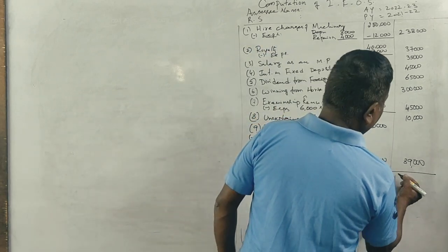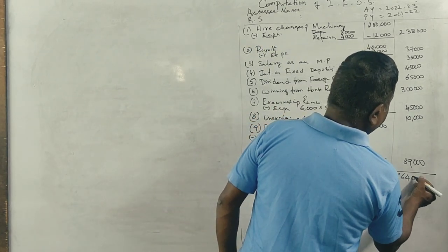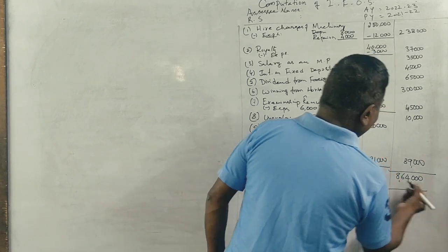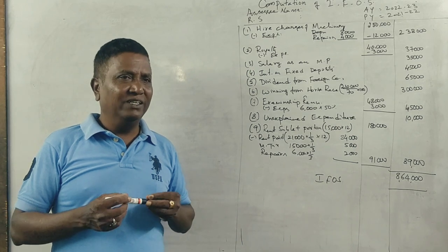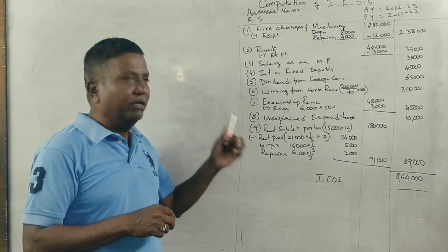That's all about the incomes. Income from other sources: Rs. 8,64,000. For this question, you get 15 marks out of 15 marks.